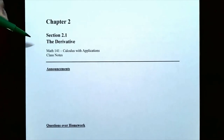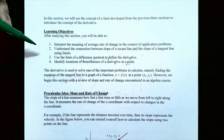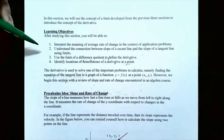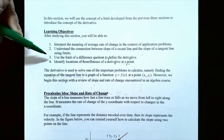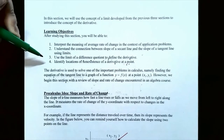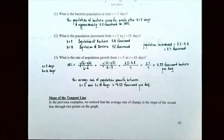Hey everyone, it's Professor Permanent. In this video, we're going to talk about the derivative. In the previous video, we talked about interpreting the meaning of the average rate of change and how it relates with the slope of the secant line. Now we're going to talk about the connection between the slope of the secant line and the slope of the tangent line using limits. We're also going to use the limit of the difference quotient to define the derivative. So let's pick up where we left off in the previous video.